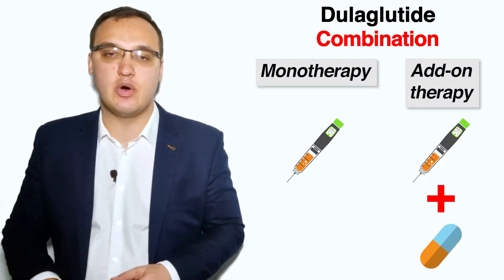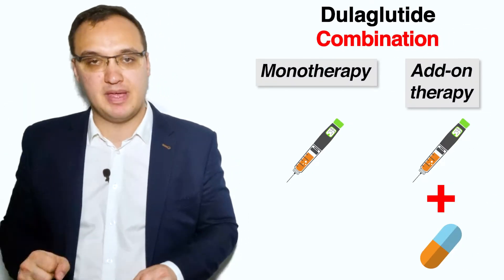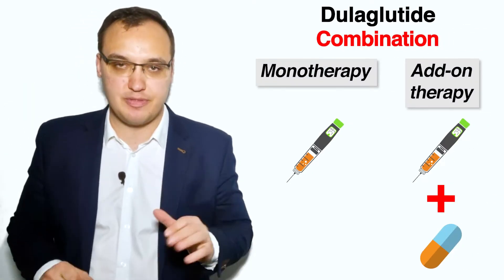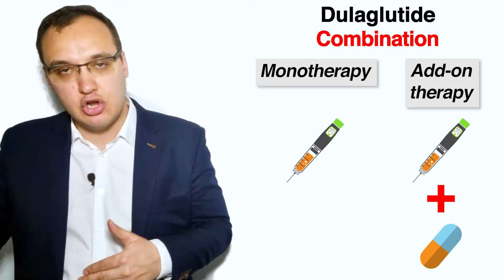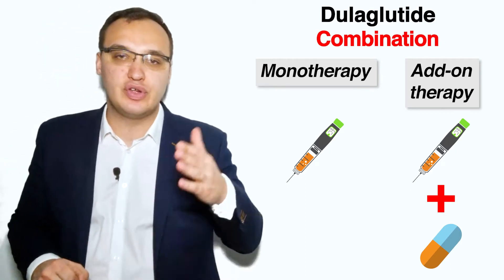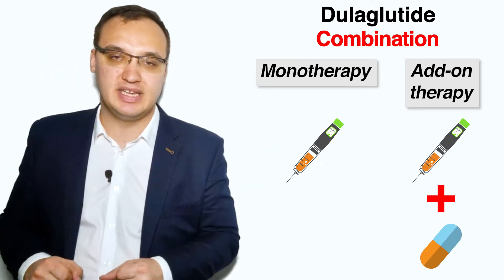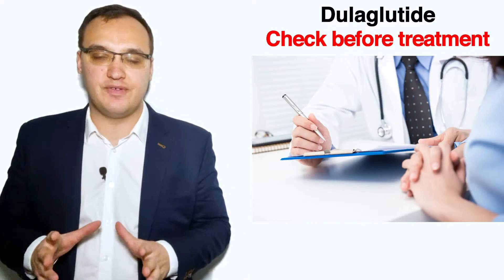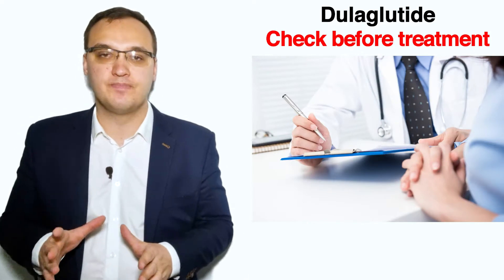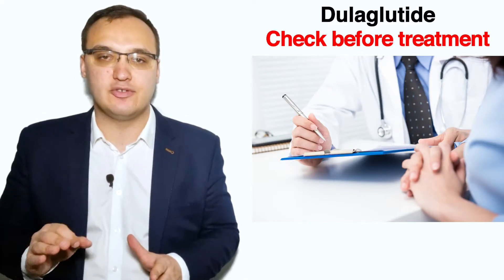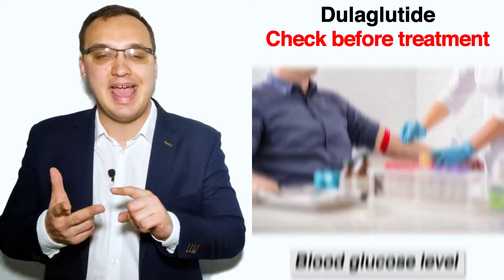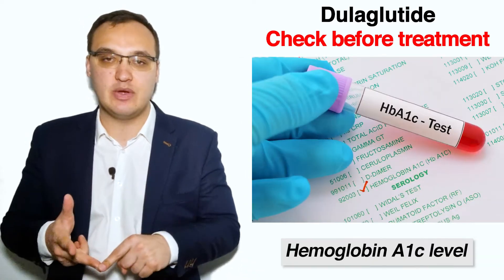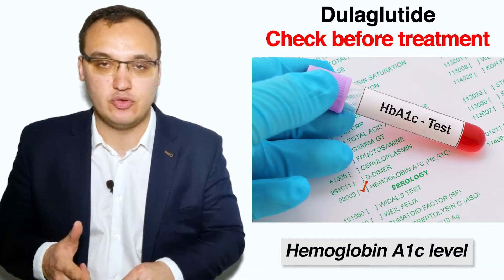Dulaglutide can be used as a monotherapy or add-on therapy, meaning it can be used alone or together with other medications like metformin. Before we give dulaglutide, some parameters such as weight, glucose levels in the blood, and hemoglobin A1c have to be checked.